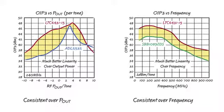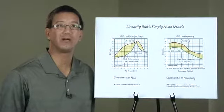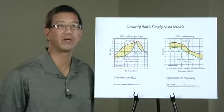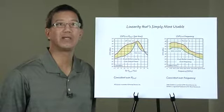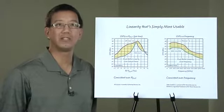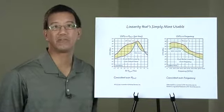The right graph shows output IP3 performance versus frequency. Compared to competitive products, the LTC6431-15 offers superior performance, regardless of frequency, with performance good enough for IF amplifiers, ADC drivers, CATV amplifiers, or 700-800 MHz LTE amplifiers.